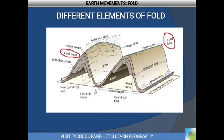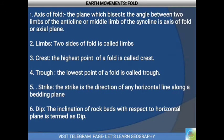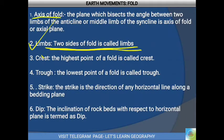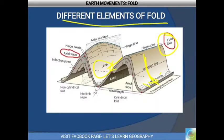Now we'll discuss the different elements of fold. First is limb — the two sides of the fold are called the limb. Next is fold axis or axis of the fold — the plane that bisects the angle between the two limbs of the anticline, or the middle limb of the syncline, is called the axis of the fold or the axial plane.